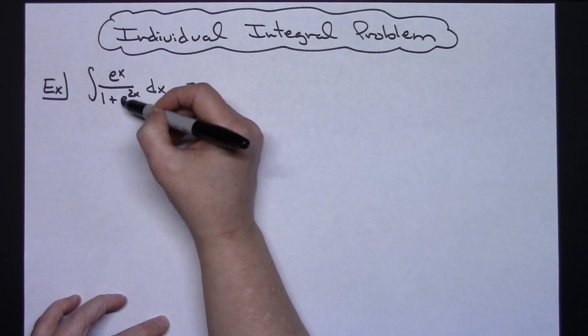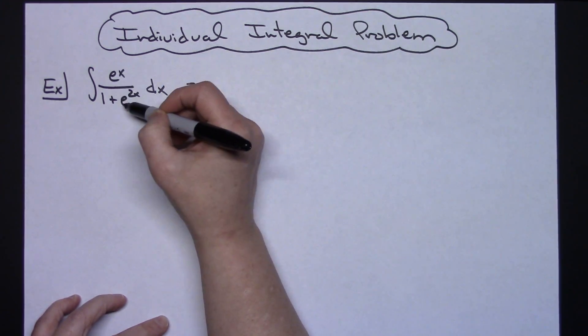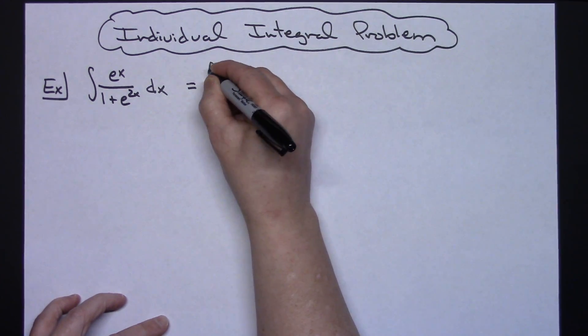I can rewrite this using my laws of exponents and have my e to the x the same and then just raised to a power of 2. So that's the first thing I'm going to choose to do.